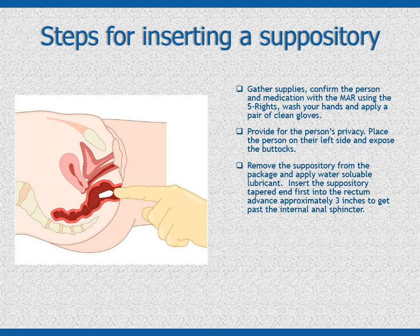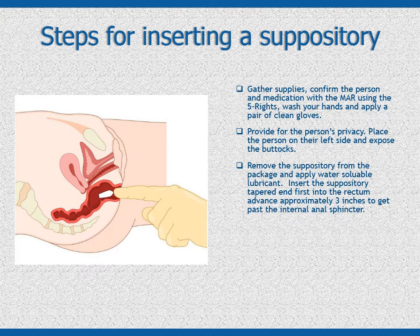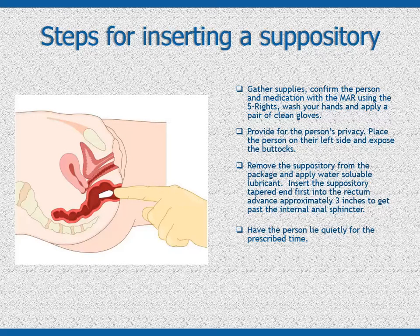Using your dominant hand, insert the tapered end of the suppository into the person's rectum using your index finger. Direct the suppository along the rectal wall toward the person's belly button. Continue to advance it about three inches, or about the length of your finger, to ensure that it passes the internal anal sphincter. Have the person lie quietly and retain the suppository for the prescribed time. If the suppository was given to relieve constipation, it should be retained as long as possible, at least 20 minutes for it to be effective.